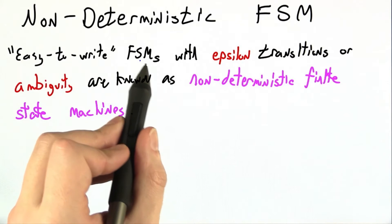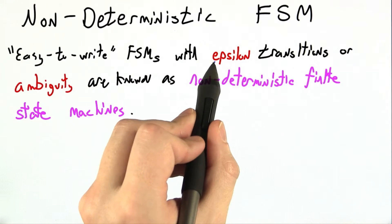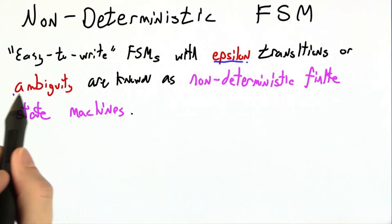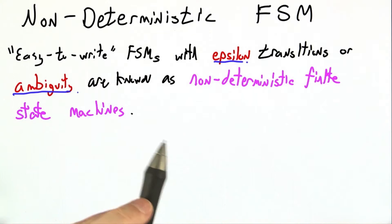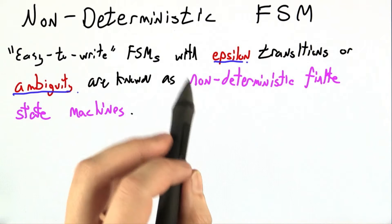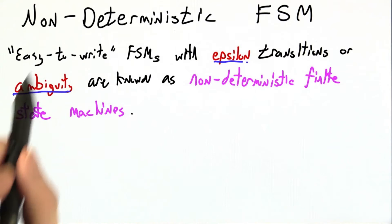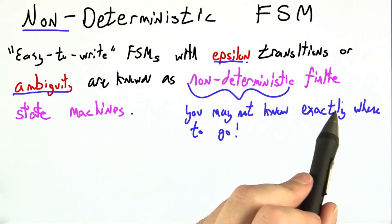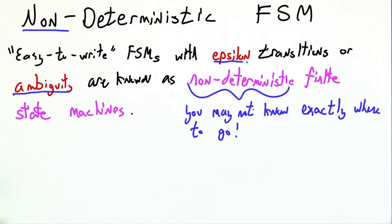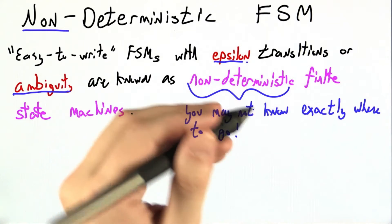These easy to write finite state machines that we've been using that involve epsilon transitions or ambiguity, remember ambiguity means that I can go to two different places on the same input, are formally known as non-deterministic finite state machines. Non-deterministic here just means that you may not know exactly where to go or where to put your finger. It's not lockstep. You have choices. You have freedom.